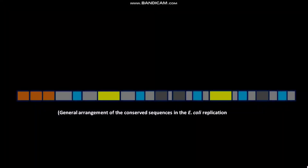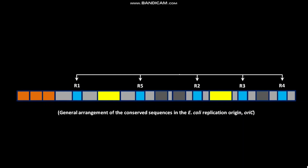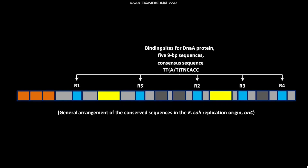This is the general arrangement of the conserved sequences in the E. coli replication origin OriC. These conserved sequences have R sites: R1, R5, R2, R3, and R4. These R sites are the binding sites for DnaA protein. These 5 R sites are 9 base pair sequences with a consensus sequence. The nucleotide sequence in the consensus sequence is TTATNCACC, where N represents A, T, G, or C.